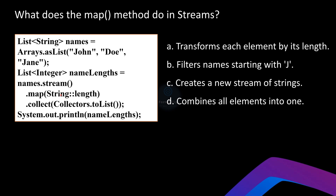The first line creates a list of names — we have three: John, Doe, and Jane. This list will be our starting point which we want to process using Java streams. The second line converts the list into a stream. Think of a stream as a sequence of elements from a collection that can be processed in parallel or sequentially. In this case it's processing the names in our list.